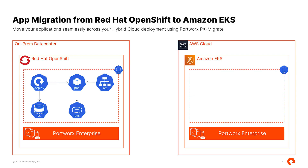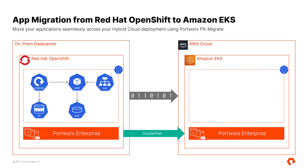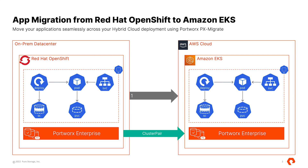Inside the migration spec you can customize your migration operation using a set of parameters, which include things like 'include resources' — set to yes because we want Portworx to move not just your persistent volumes but all the different Kubernetes objects as well. We also set 'start applications' to true, so that as soon as the migration is done the application comes online on our destination site. You can customize each migration operation based on your use case.